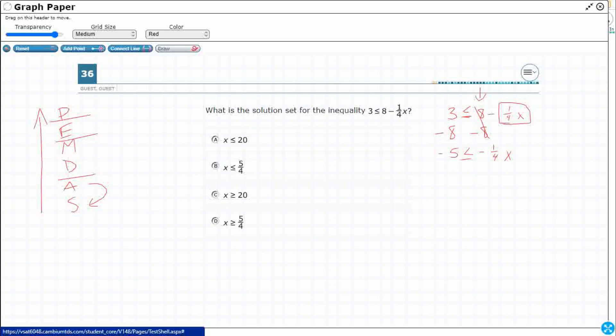Now we've got this negative 1/4 times x. This is multiplication, so how do we get rid of it? We divide. So we need to divide both sides by negative 1/4. That's kind of wonky - look at that, I'm dividing a fraction by a fraction.